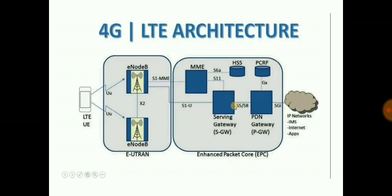FDD uses separate frequency bands to transmit uplink and downlink data, whereas TDD uses time slots on the same frequency for both uplink and downlink. LTE uses OFDM, that is orthogonal frequency division multiplexing. It does not support circuit-switched method.